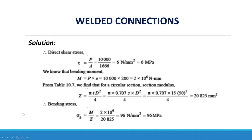The bending stress is σ_b = M / Z = (2 × 10⁶ N·mm) / 20,825 mm³ = 96 N/mm² or 96 MPa. Therefore, the shear stress is 6 MPa and the bending stress is 96 MPa.